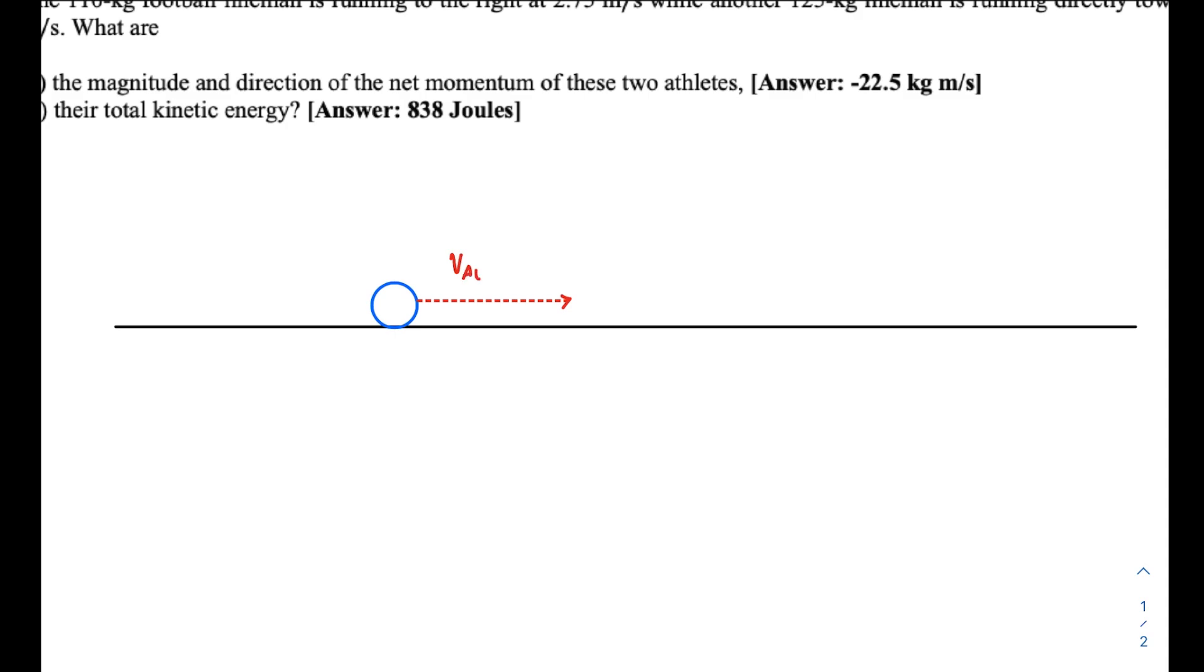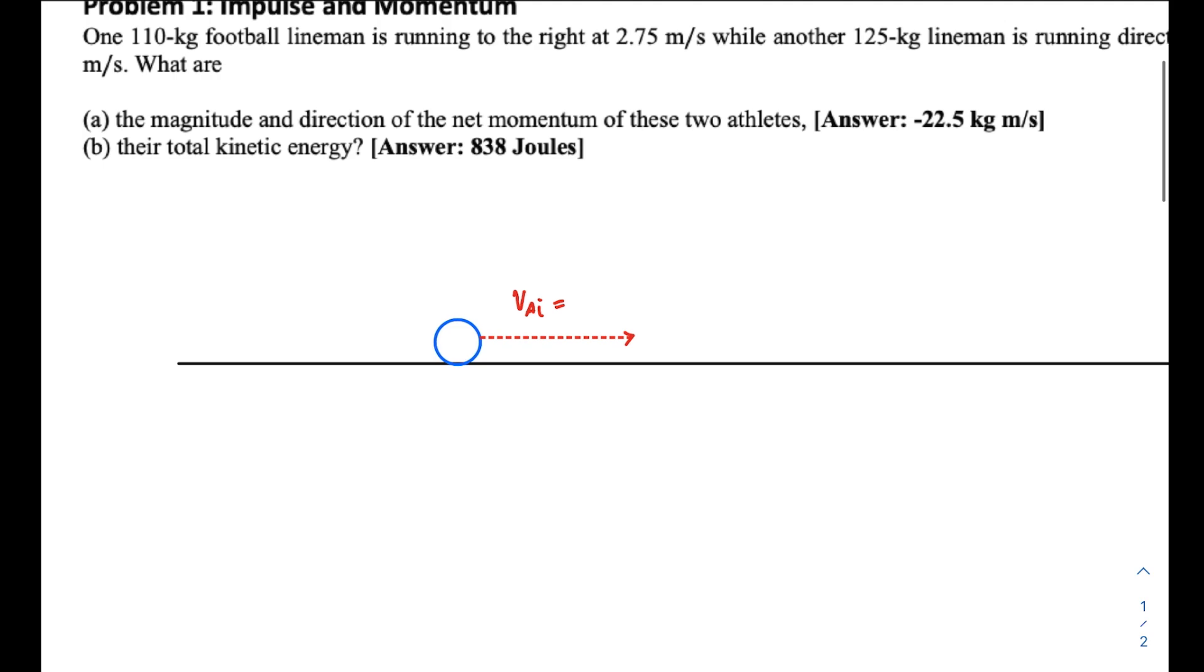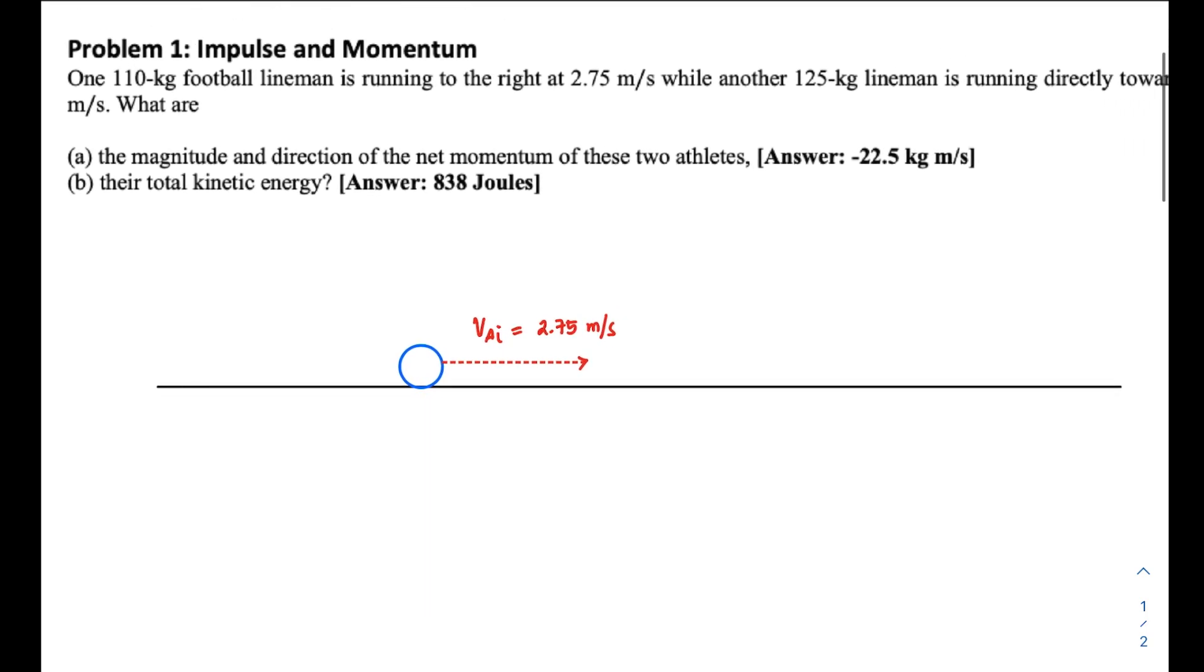means object A (the 110-kilogram lineman) is moving at 2.75 m/s to the right, so it has a positive sign. Continuing with the problem, there is another 125-kilogram lineman, so this one is slightly